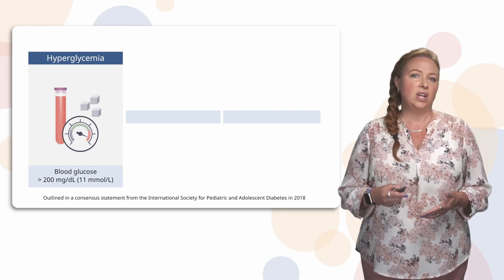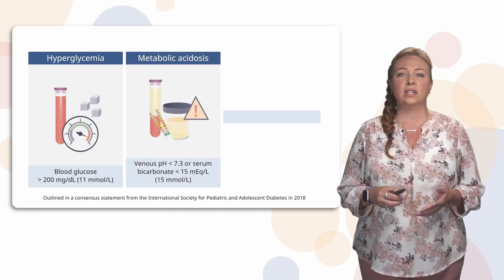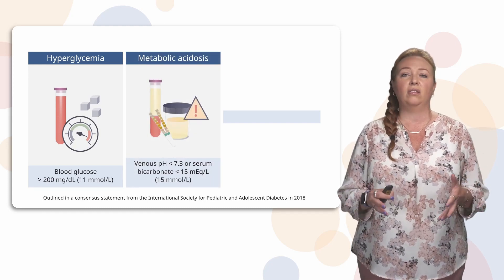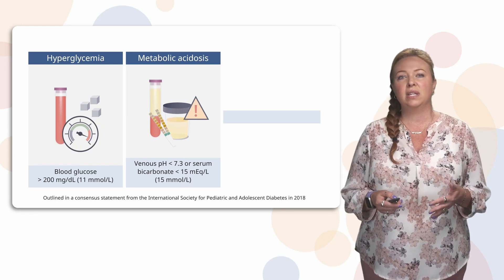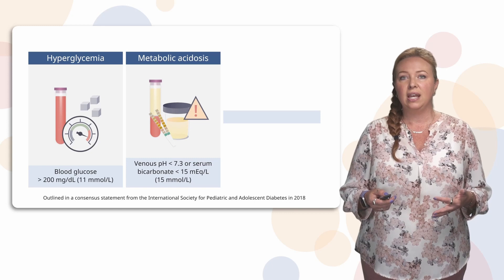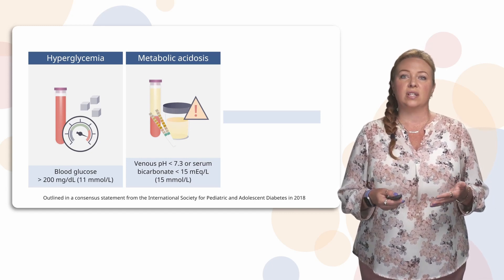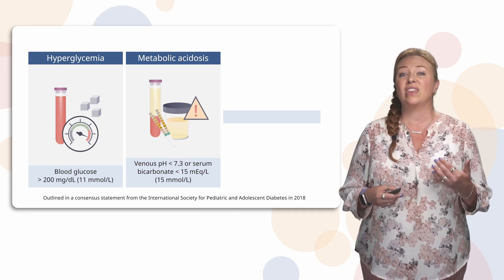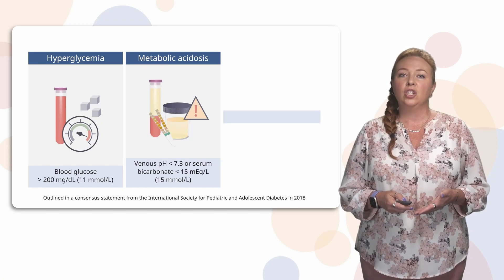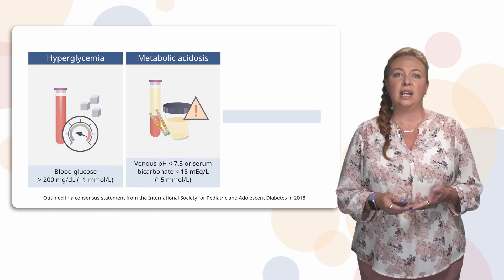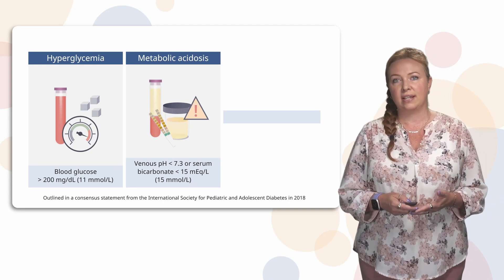You also have to have the presence of metabolic acidosis. When you have metabolic acidosis, the pH of your blood is going to be too low. For diabetic ketoacidosis, we're looking for a venous pH less than 7.3. You can also look at the bicarbonate level of a patient — if that's less than 15, that will also mean that your patient is acidotic.